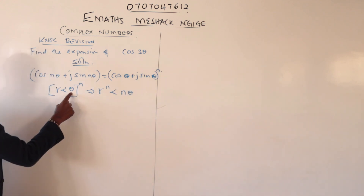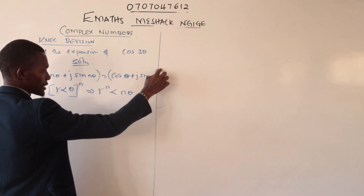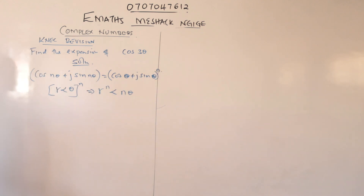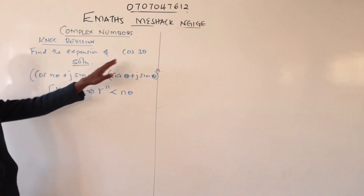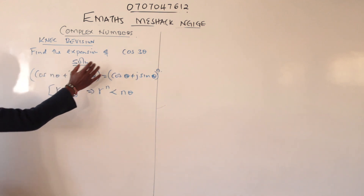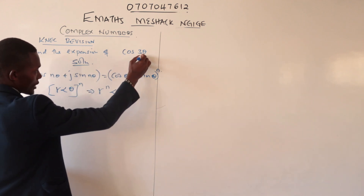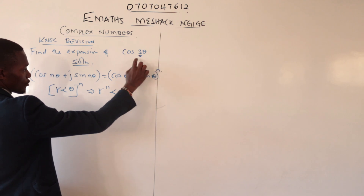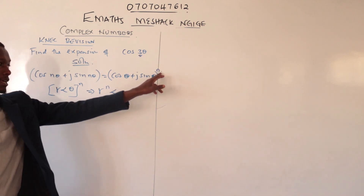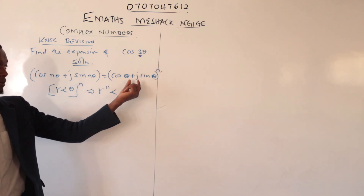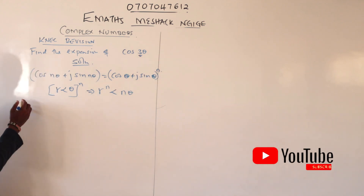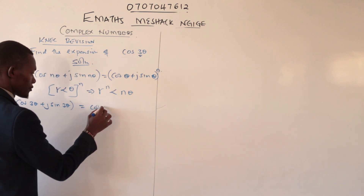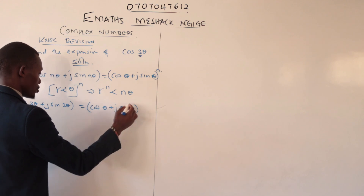So the whole expression in polar form is represented by this. If I raise this part to a power, I just multiply θ by n, giving us nθ. We can use the same approach to expand our function. If n is replaced by 3, then cos(θ) + j·sin(θ) to the power 3 gives us cos(3θ) + j·sin(3θ).